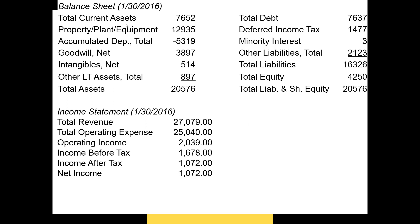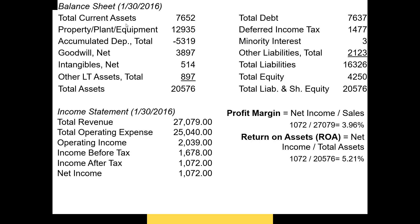I've provided Macy's balance sheet and income statement for the end of fiscal year 2016. Our profit margin is net income divided by total sales — taking net income off the income statement and dividing it by total sales — and we find that Macy's profit margin is 3.96%. Our ROA is net income off the income statement divided by total assets off the balance sheet, and that's 5.21%.